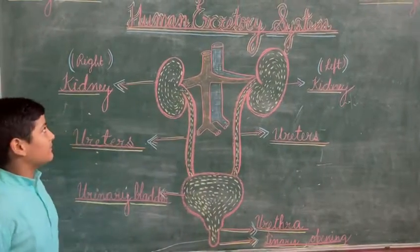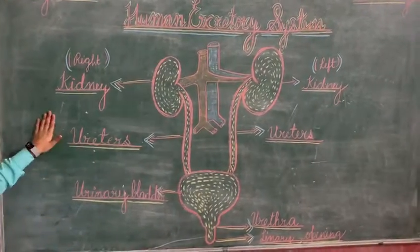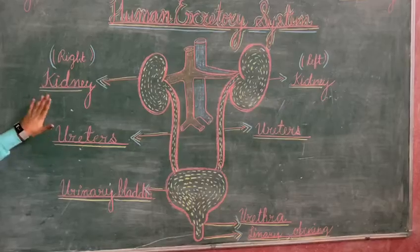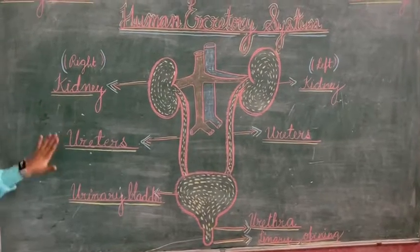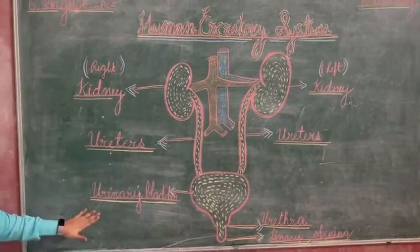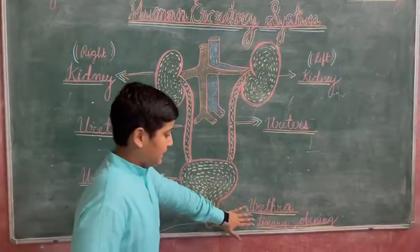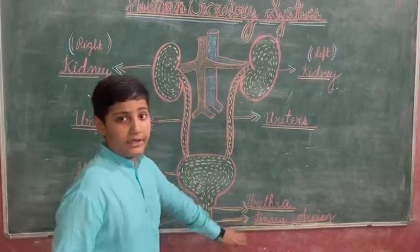What is the excretory system? The excretory system consists of a pair of kidneys, ureters, urinary bladder, and urethra.